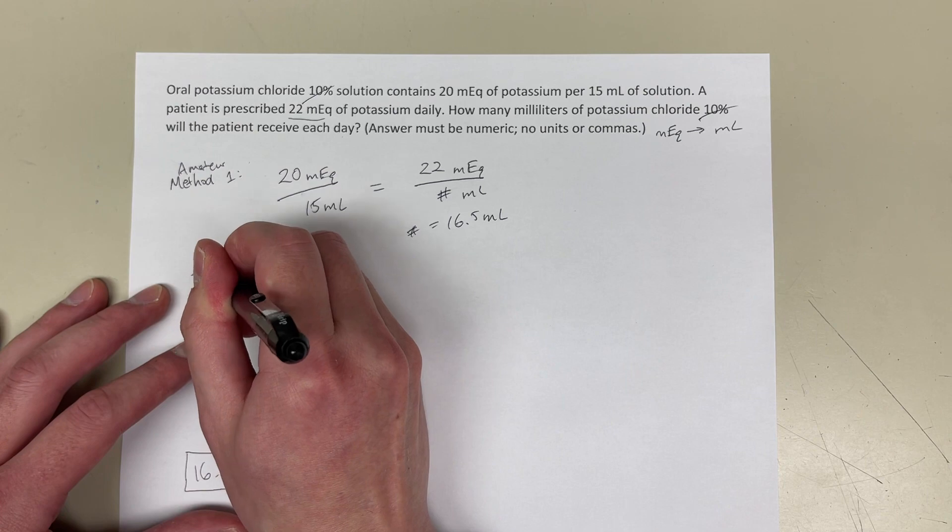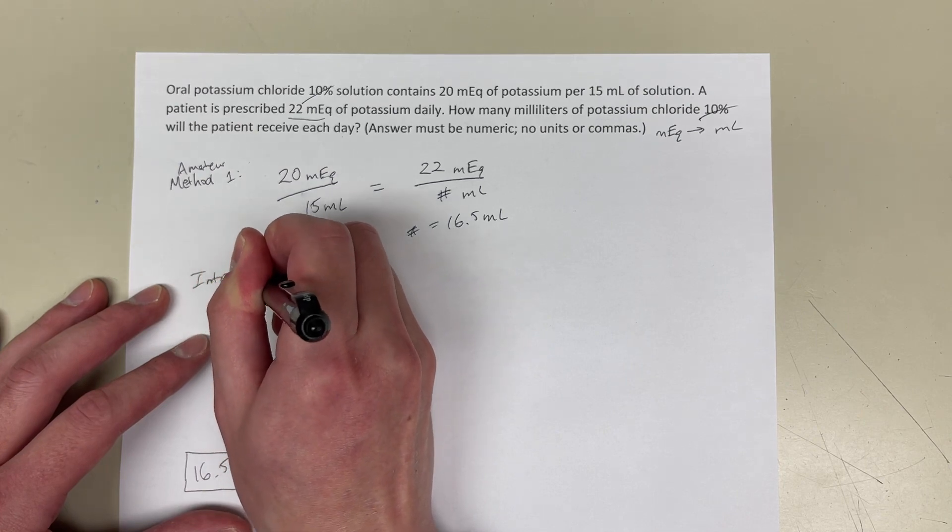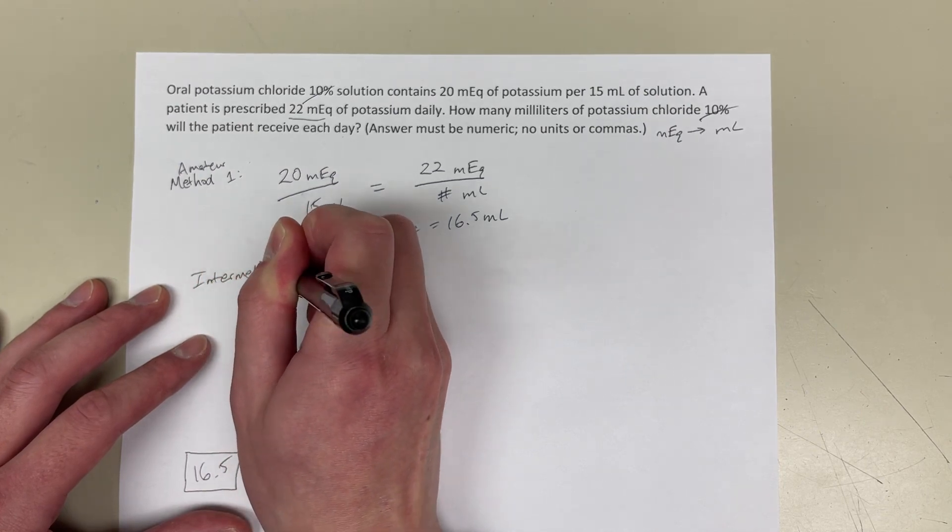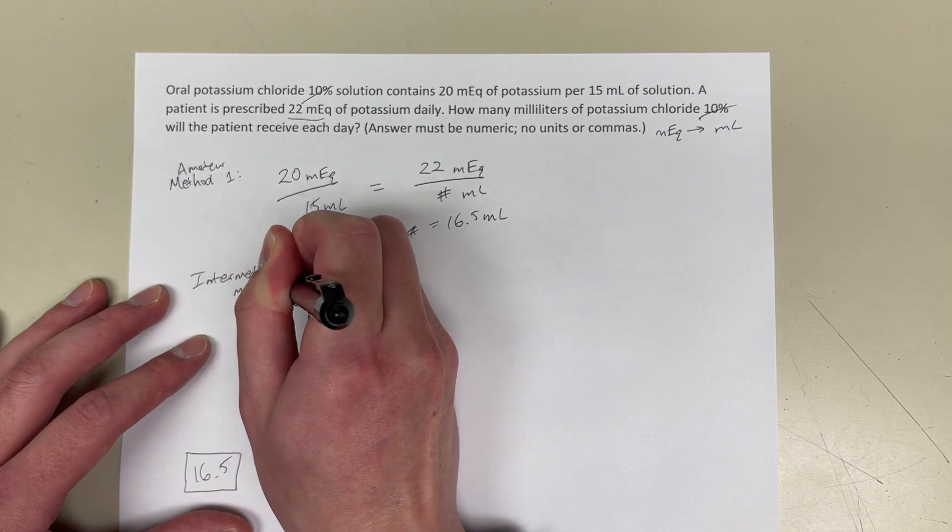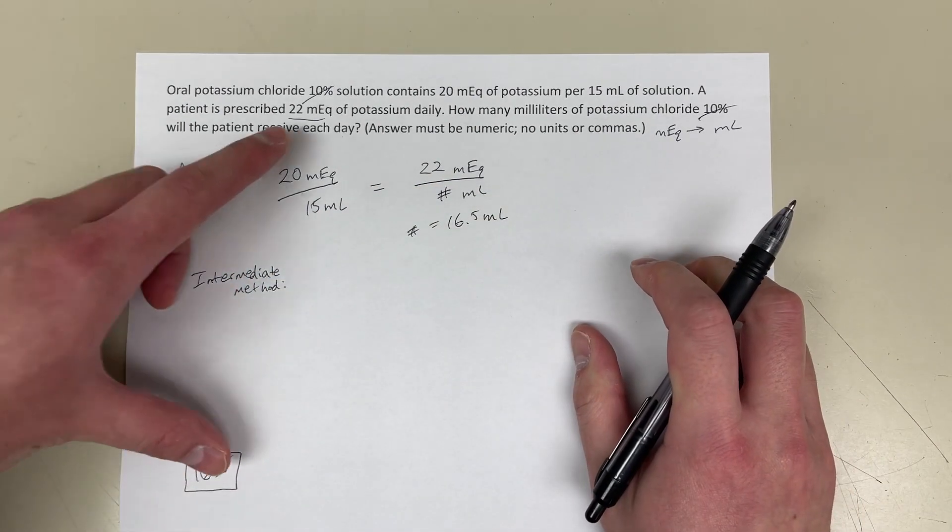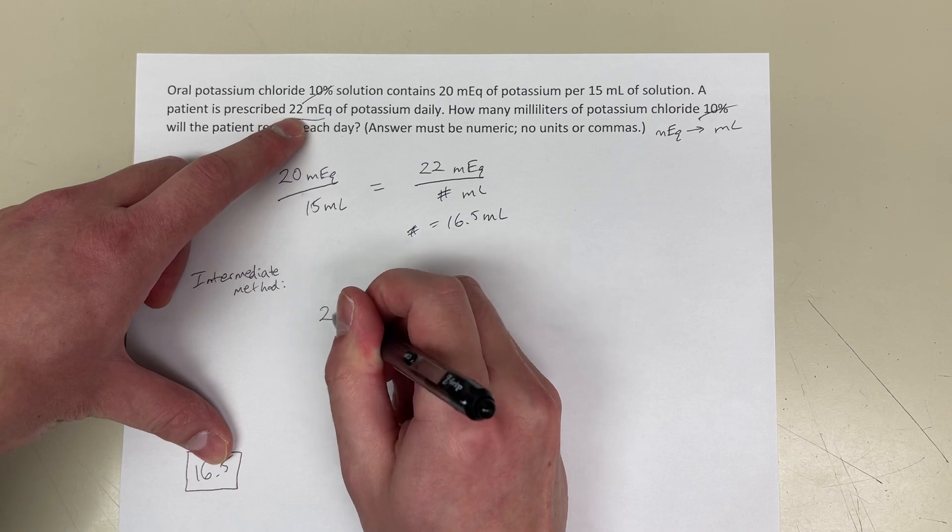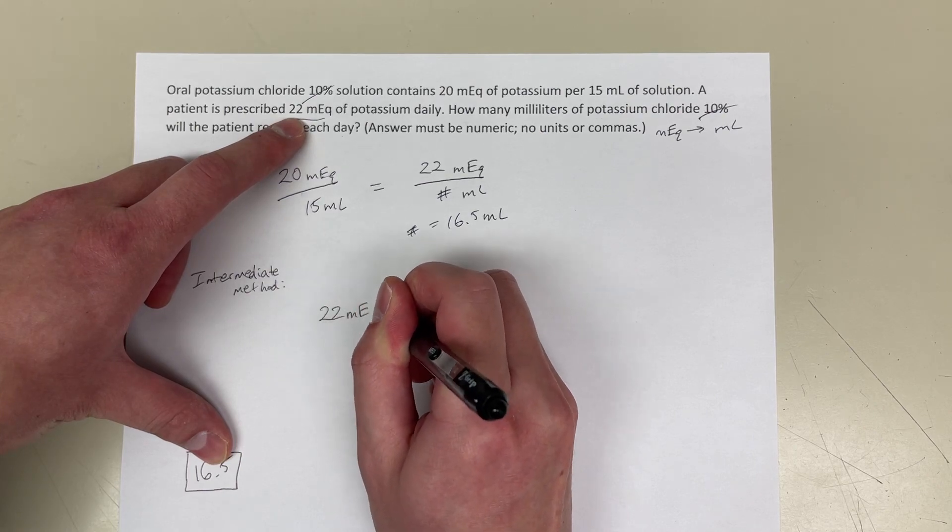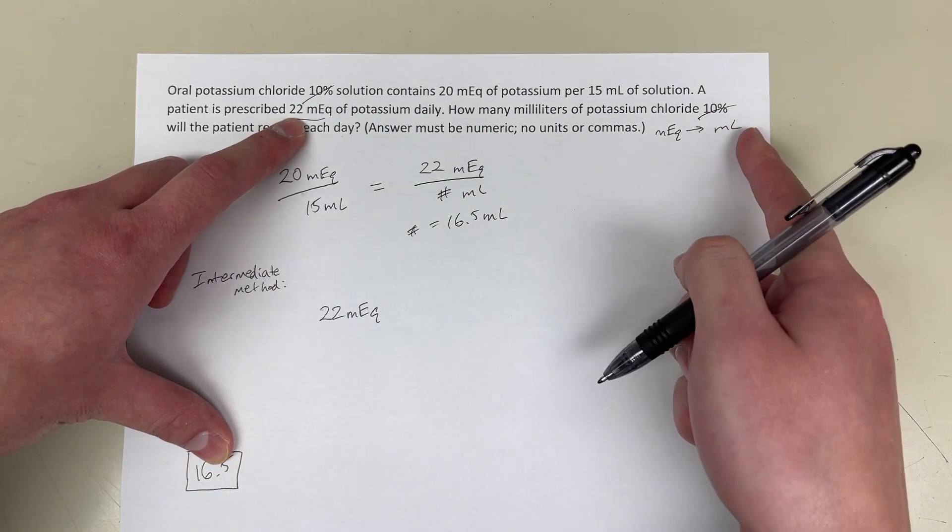So, the next method I'm going to show you is kind of more intermediate. So, I'm going to start off with 22 milliequivalents of potassium, because that's what they want us to convert from milliequivalents to milliliters.